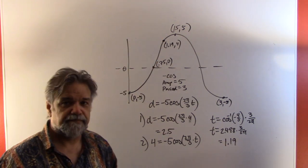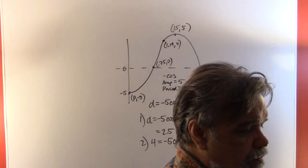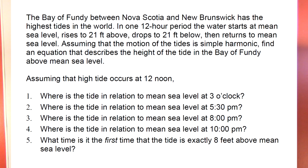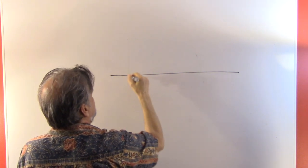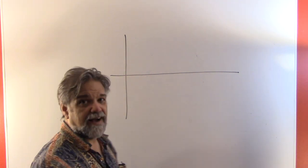One more problem — this one is about the Bay of Fundy, one of my favorite places, between Nova Scotia and New Brunswick. It has the highest tides in the world. In one 12-hour period the water starts at mean sea level, rises to 21 feet above, drops to 21 feet below, then returns to mean sea level. We'll assume the motion is simple harmonic, and that high tide occurs at 12 noon.